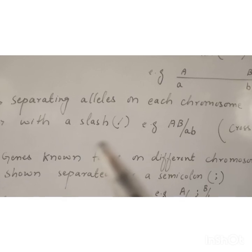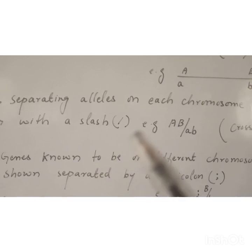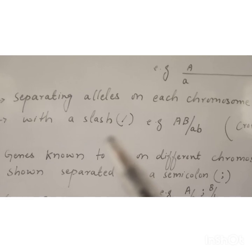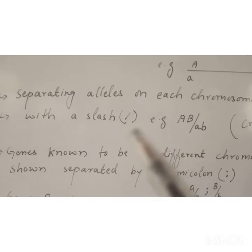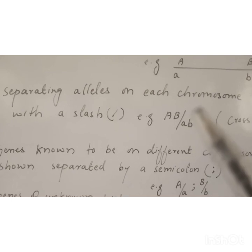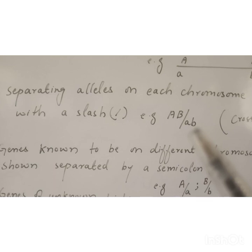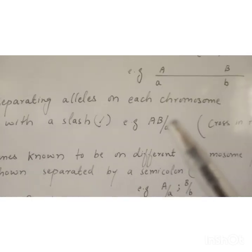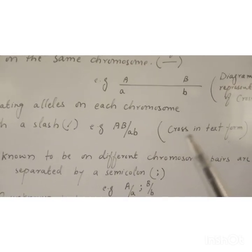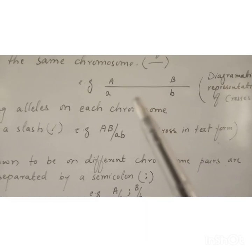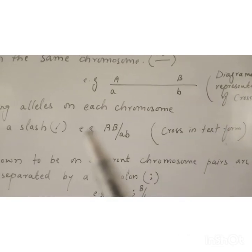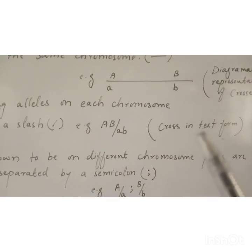Separating alleles on each chromosome can also be done with a slash. If the cross is in text form, it is represented as a slash. If the cross is in diagrammatic form, it is shown as a single line. If the cross is in text form, it is shown as a slash.